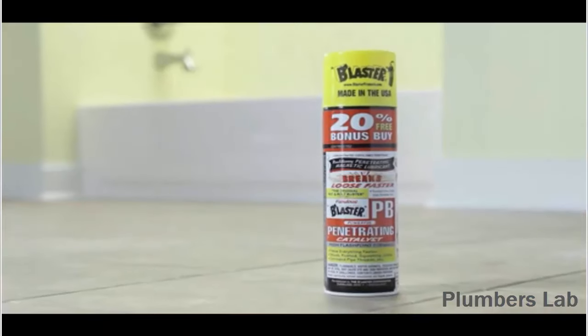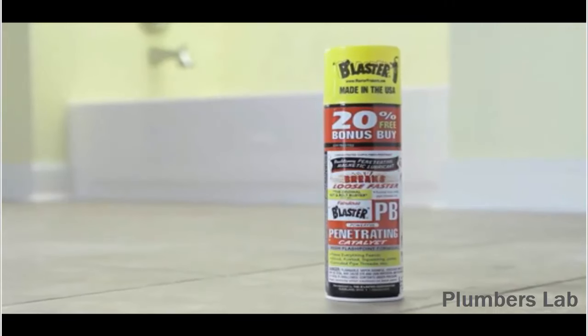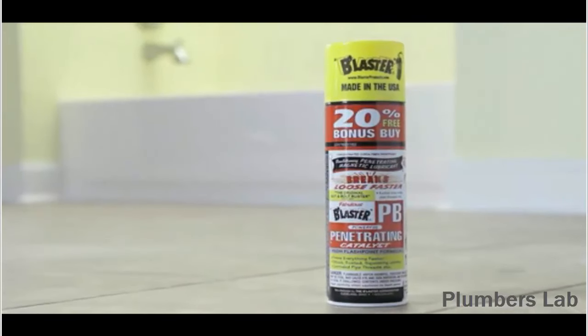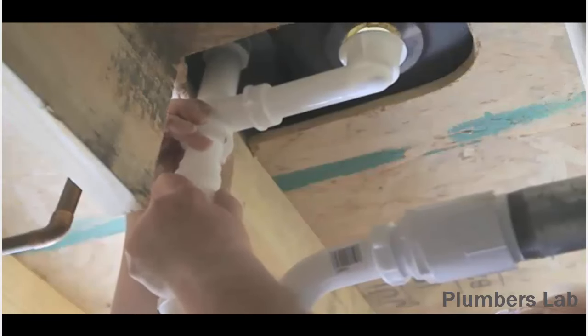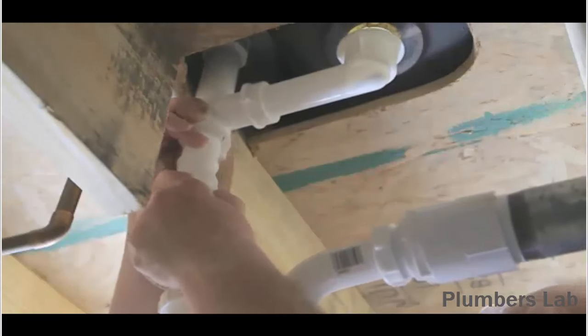If your fittings are galvanized steel, you may need a penetrating lubricant like PB Blaster to loosen the joints. Once you've loosened the nut connecting the drain pipe, unscrew it the rest of the way by hand and lift out the entire section.